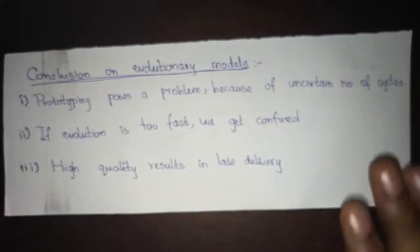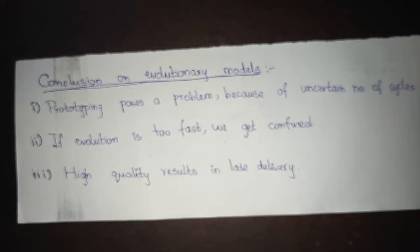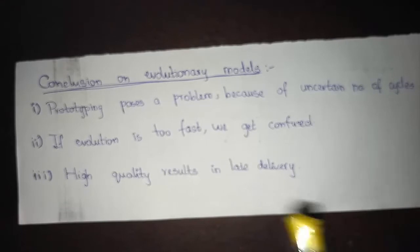To conclude, prototyping poses a problem because of an uncertain number of cycles. If evolution is too fast, we get confusion in the development project. We need to maintain the speed low enough that productivity is not affected and we get a good product instead of confusion between the team and customer. High quality results in late delivery, so we need to balance between these two. Hence, the evolutionary models are developed to build a software project that is changing continuously. It is very accurate in nature and can produce high customer satisfaction, except these points can be sometimes critical in development.